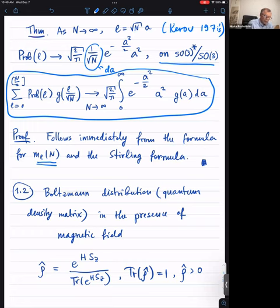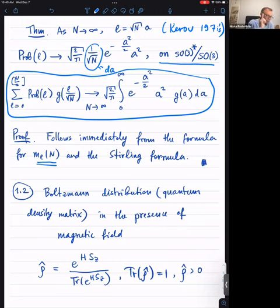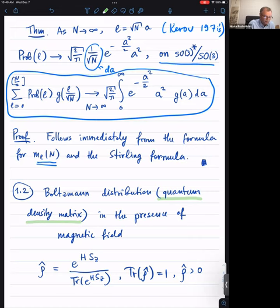This theorem follows immediately from the explicit formula for the multiplicity in terms of binomial coefficients and from Stirling's formula. That's an example of such statistics — we find the Plancherel measure and miraculously it has this continuum limit. Now let's consider something more interesting from the physical point of view: the Boltzmann distribution for a quantum system, strictly speaking a quantum density matrix corresponding to the quantum Boltzmann distribution.